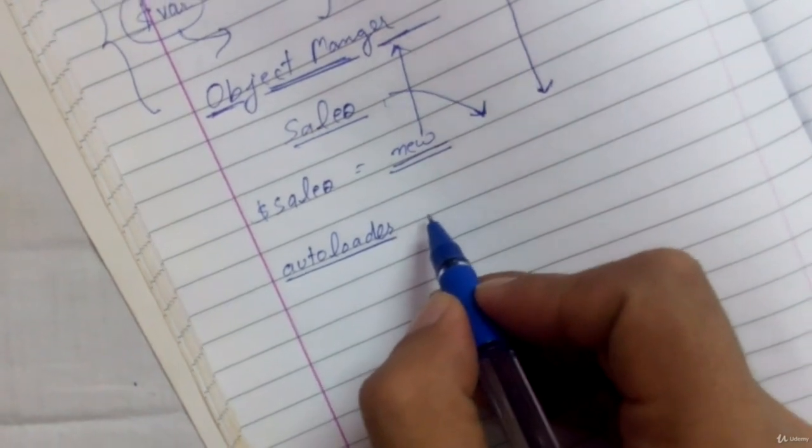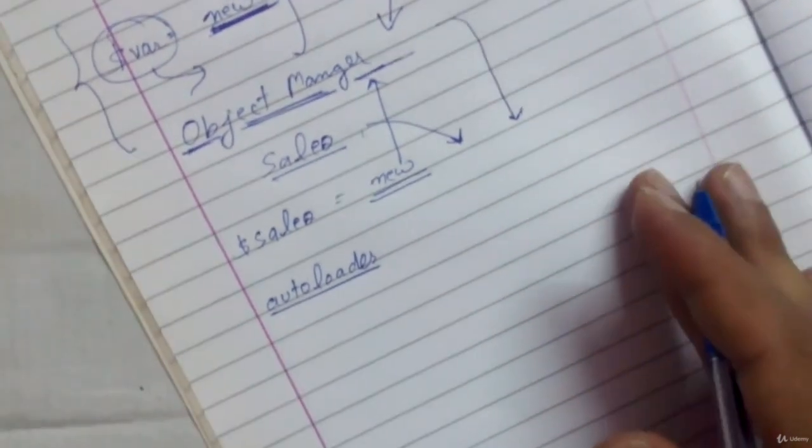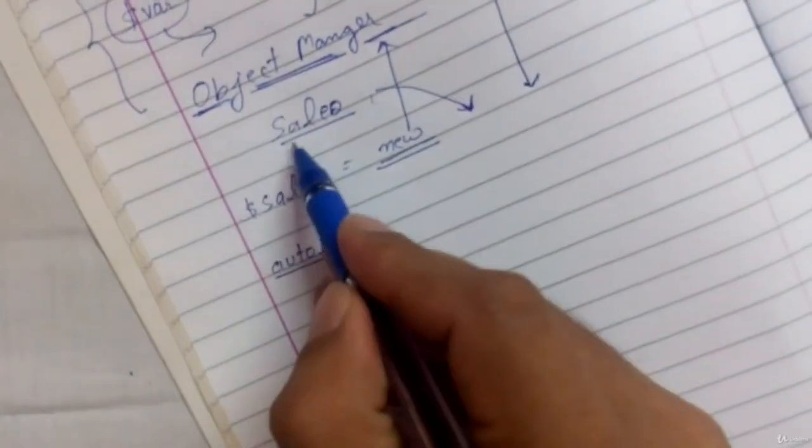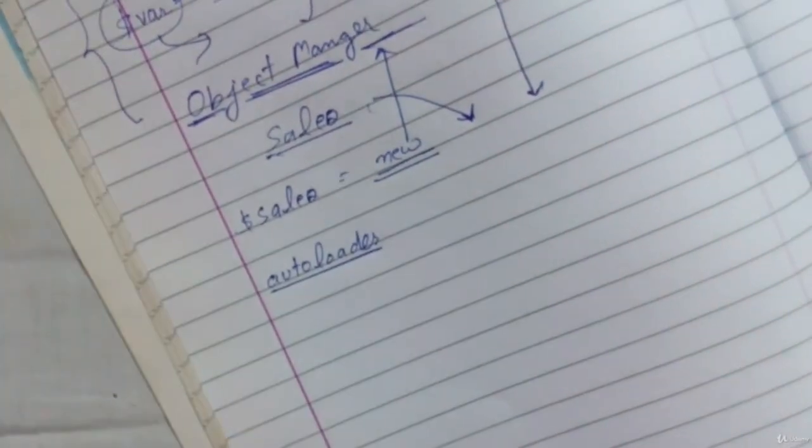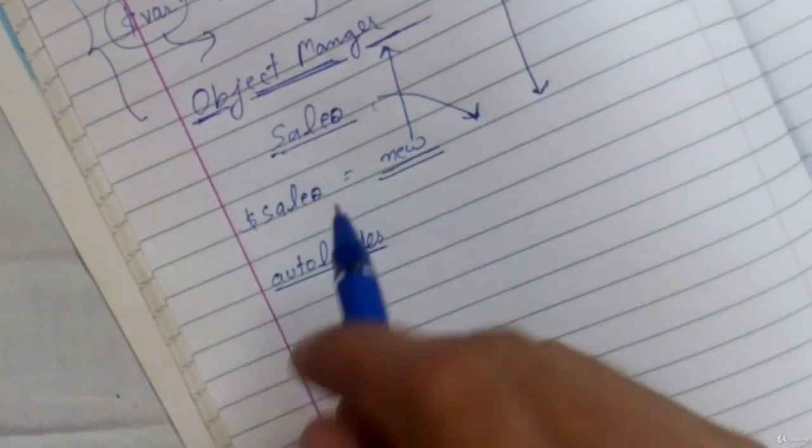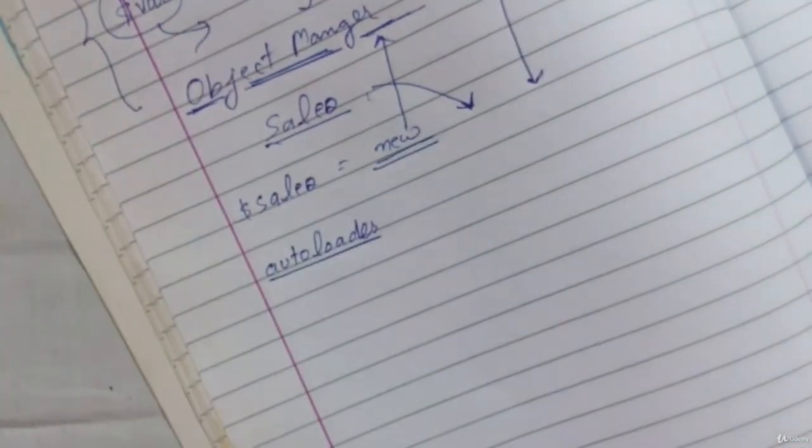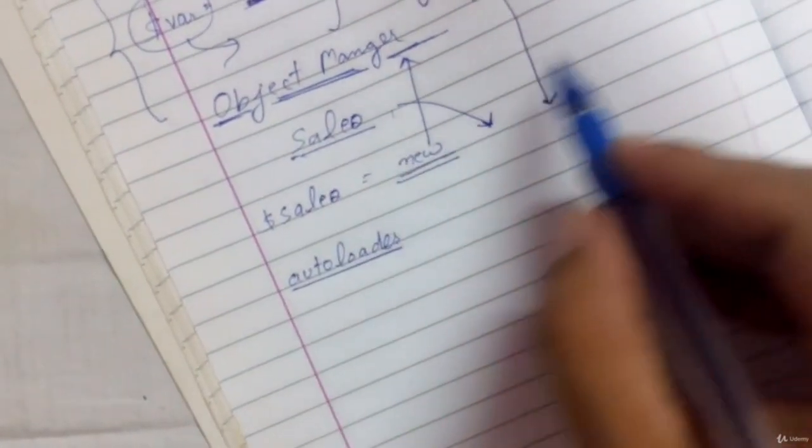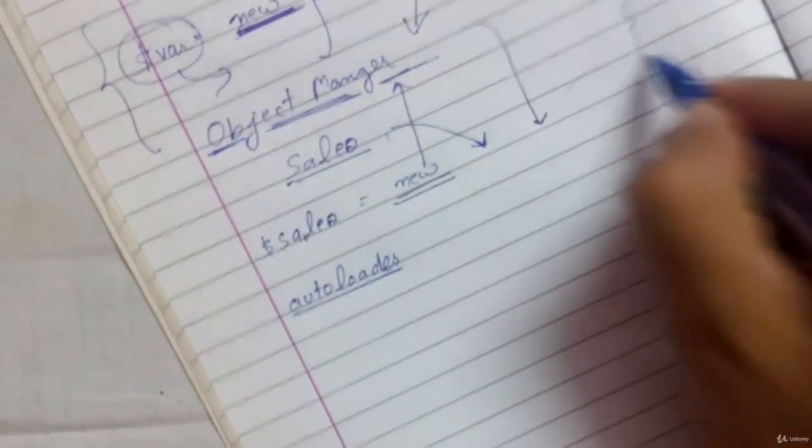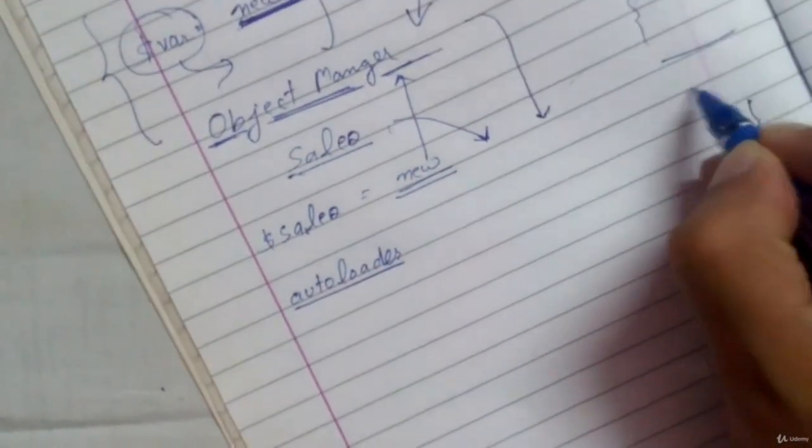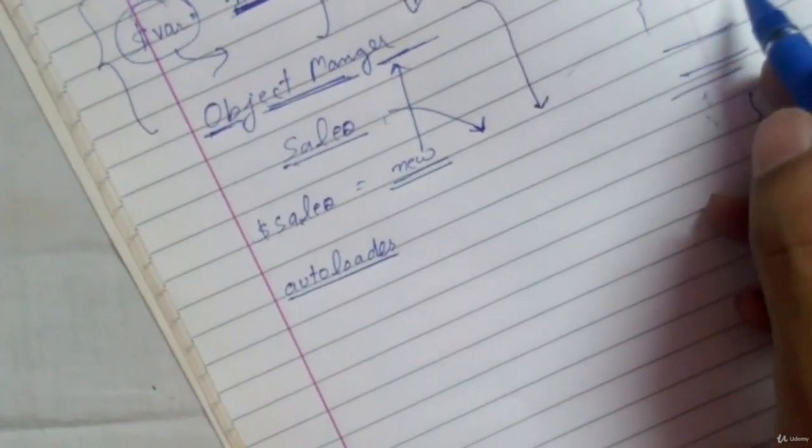So generally we do have an auto loader class to automatically resolve the dependencies. Just let's go to the background here. Whenever I was creating a new class named as sales, this class may have certain other dependencies as well. Now to resolve these dependencies, what I have to do is I have to create their objects as well in my sales class.